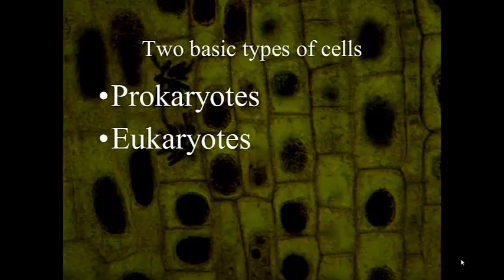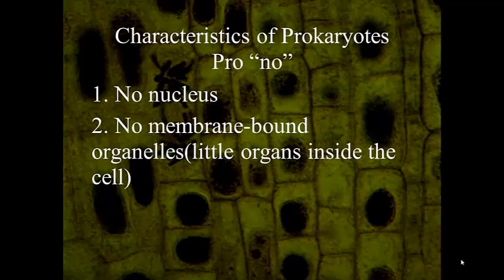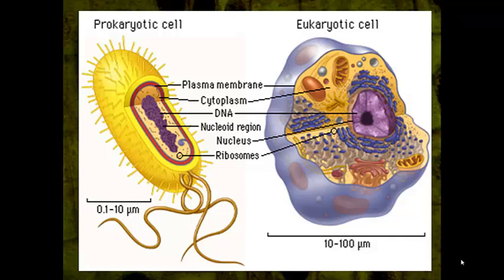We have two basic types of cells: prokaryotic and eukaryotic. In class we did talk about the difference between 'pro' and 'eu' — hopefully you'll be able to remind me of that tomorrow. Characteristics of prokaryotes: 'pro' means no nucleus and no membrane-bound organelles. They do have organelles, but the organelles within a prokaryotic cell do not have a membrane. Prokaryotes are the smaller type of cell, like archaea bacteria.